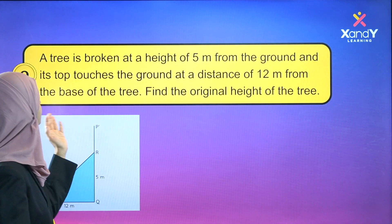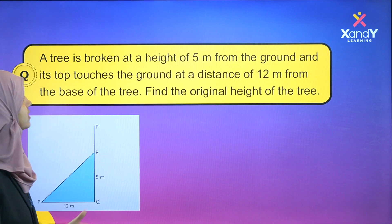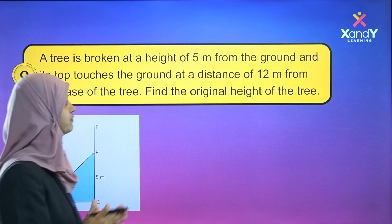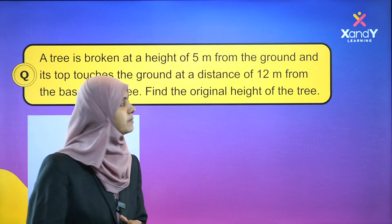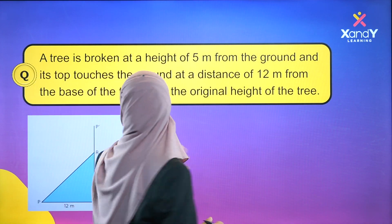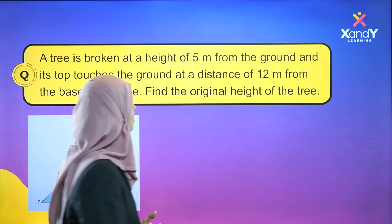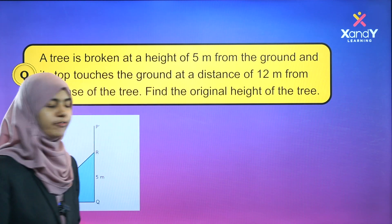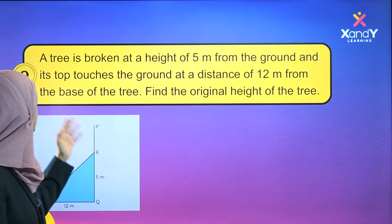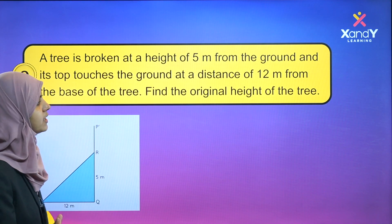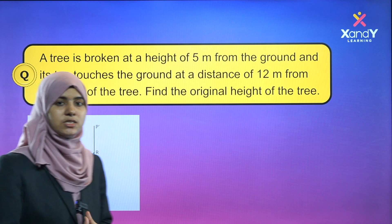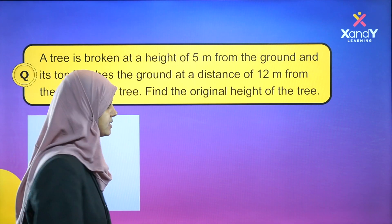A tree is broken at a height of 5 meters from the ground, and its top touches the ground at a distance of 12 meters from the base of the tree. Find the original height of the tree.